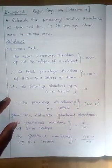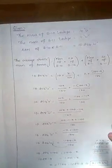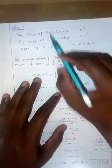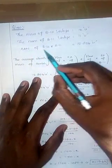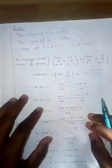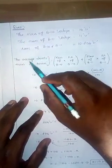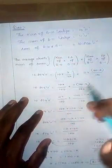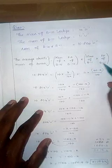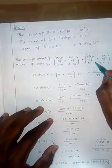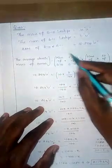Now we are ready for the calculation. The given data: the mass of the Boron-10 isotope is 10u, since 10 is the mass number. Similarly, the mass of Boron-11 is 11u. The average atomic mass of boron is 10.804u. The formula is: average atomic mass of boron equals (mass of B-10 × fractional abundance of B-10) plus (mass of B-11 × fractional abundance of B-11).